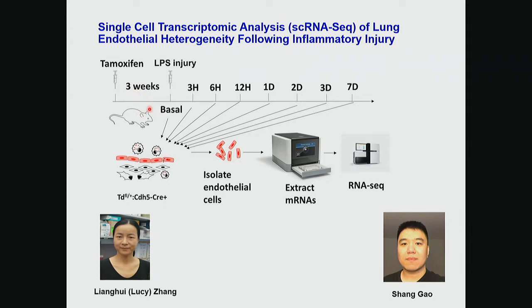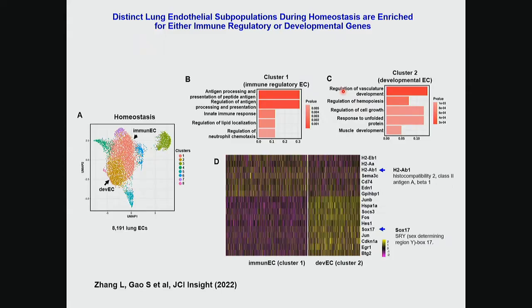We injected the lungs of mice which had a red fluorescent tag in the endothelium, then harvested the tissue at three hours, six hours, 12 hours, and so on. At seven days is when the lung fully regenerates in the surviving mice. We tried to use a non-lethal dose of this bacterial toxin, LPS. Single-cell RNA sequencing — this is something all of you are familiar with. Just a UMAP plot here. This is baseline — even at baseline, what we found is that there are two predominant clusters in the mouse lung endothelium.